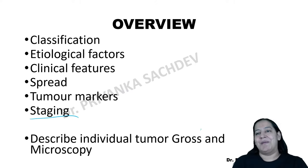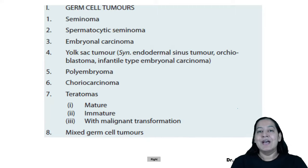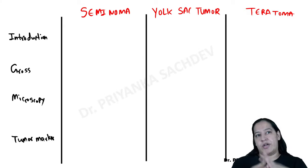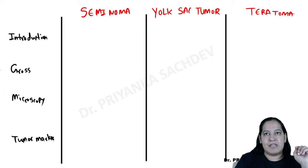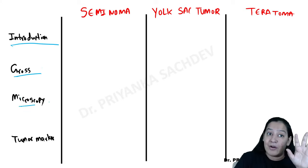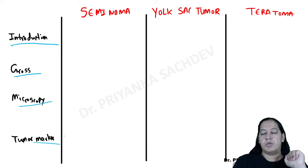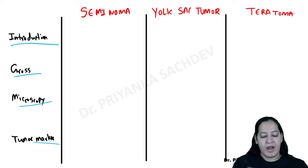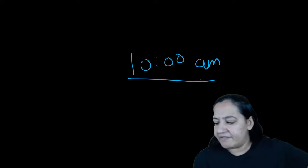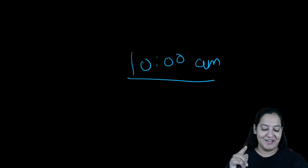The most important remaining portion is the gross and microscopy of individual tumors — seminoma, Yolk sac tumor, and teratoma. Most MCQs come from this section. Please make a table with columns for introduction, gross appearance, microscopy, and tumor markers for each. I am ending this lecture and will join you again in 10 minutes at 10 AM sharp on Episode 2 of testicular tumors on YouTube.